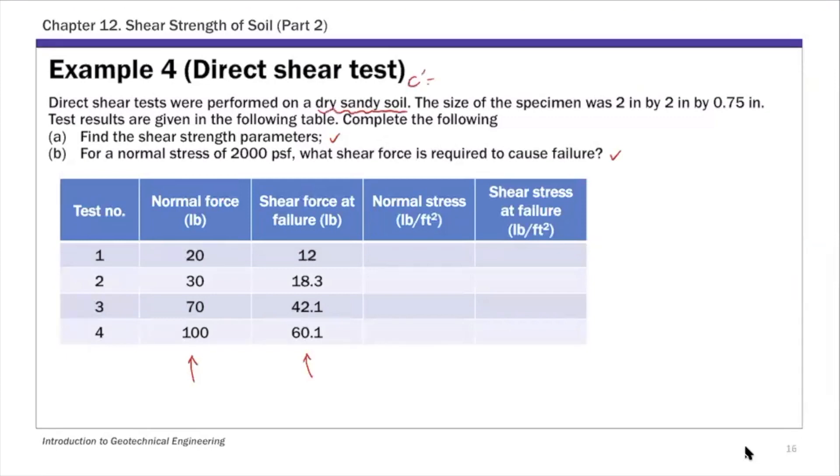For dry sandy soil the c prime parameter is zero, so this problem is really asking for phi prime.